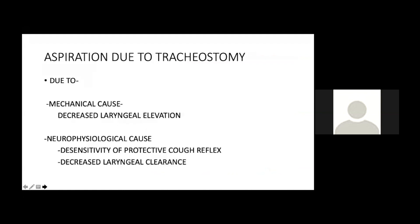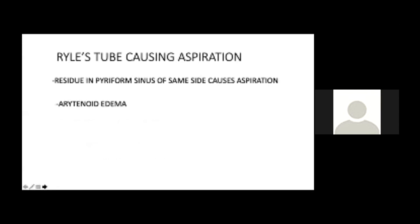Tracheostomy increases aspiration — contrary to the old concept that it decreases aspiration. It increases aspiration by mechanical causes — decreasing laryngeal elevation — and by neurophysiological causes — desensitizing the cough reflex, decreasing laryngeal clearance, and eliminating the normal air blast from the lungs to the subglottis. The Ryle's tube can also cause aspiration due to residue in the ipsilateral piriform sinus and arytenoid edema.